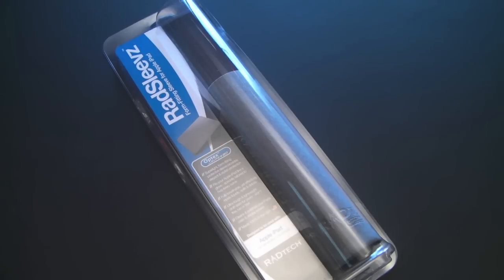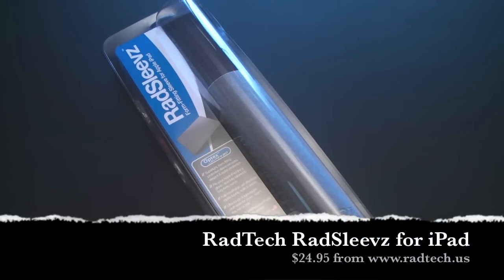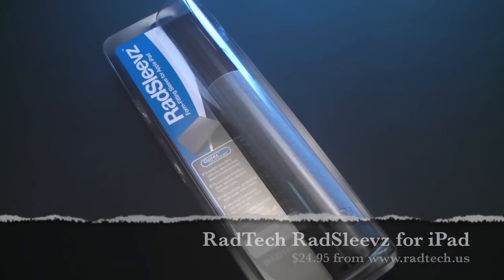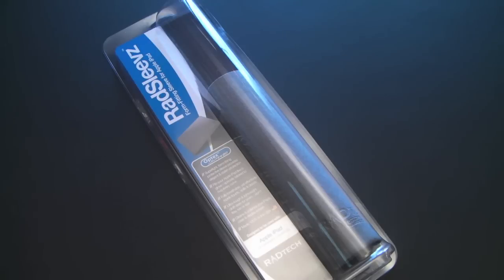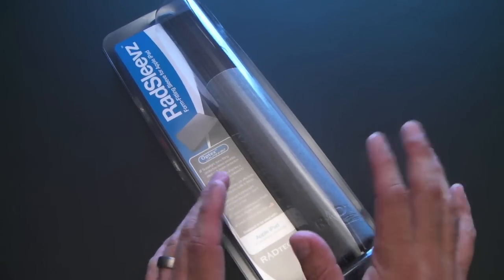Hey guys, it's Larry Greenberg. Today we're going to take a look at the Rad Sleeve from Radtec. This is a form-fitting sleeve for your iPad and it's made from Radtec's Optex material. It sells for $24.95 and it comes in six different color variations. I have the gray here.